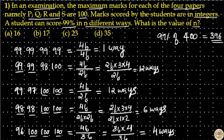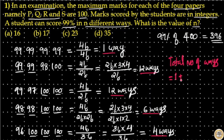Total number of ways equals 1 plus 12 plus 12 plus 6 plus 4, which is equal to 35 ways. So option D is your answer.